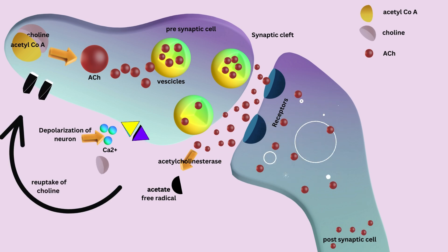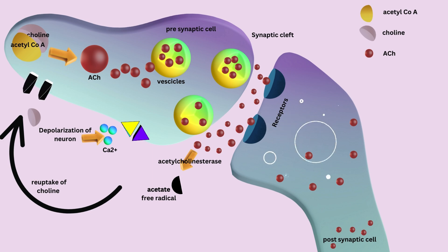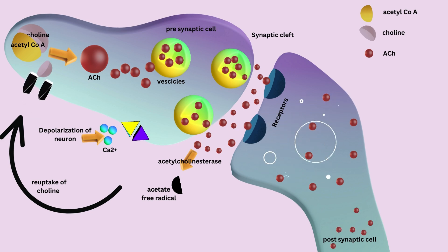The free choline is then reuptaken by the cholinergic terminals via high-affinity transporters to form acetylcholine in combination with acetyl-CoA.